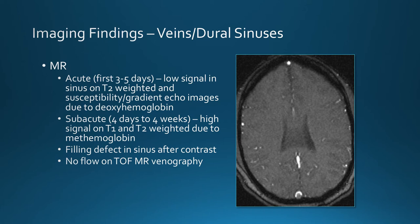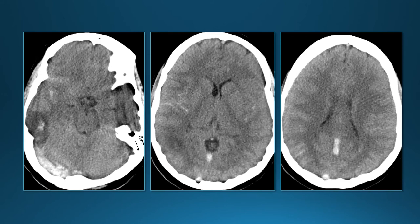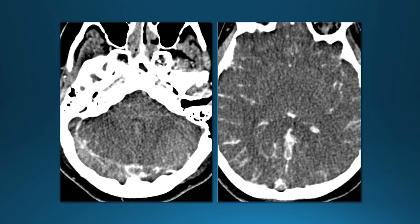Time-of-flight MR venography shows no flow within the thrombosed sinus — here you can see absent flow within the sagittal sinus. On CT, this non-contrast image shows high density in the transverse sinus and also in the straight sinus, with a post-contrast filling defect and no enhancement within the thrombosed sinus — this is the empty delta sign.